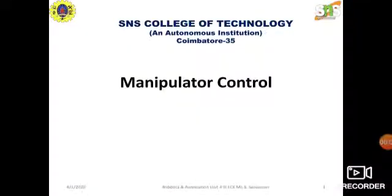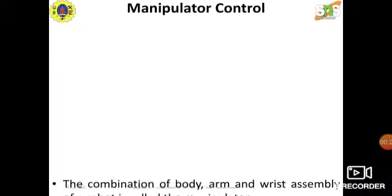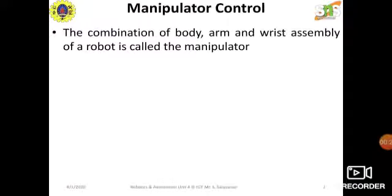Dear students, we are discussing Manipulator Control, which is a topic covered in the fourth unit of Robotics and Automation. A manipulator means a combination of body, arm and wrist assembly of a robot — together this is called a Manipulator.